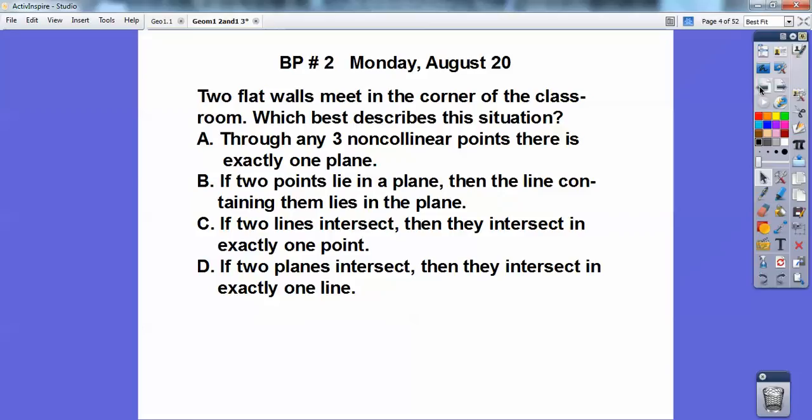Two flat walls meet in the corner of a classroom. Which best describes this situation? So remember, two flat walls. Look at two flat walls in the classroom, and look where they meet in that corner. Do you see that corner right there? What best describes that? Through any three non-collinear points or exactly one plane? I don't know.